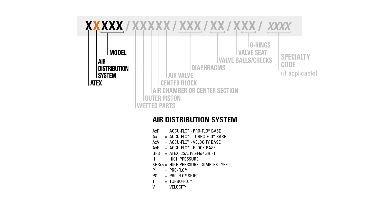The next digit is the designation for the pump's air distribution system, identified by one to three letters. For example, P is for ProFlow, PS is for ProFlow Shift, and T is for TurboFlow. The AccuFlow air distribution system starts with A, followed by the model, and includes the base air system. For example, a half-inch AccuFlow pump with the ProFlow base air distribution system would be denoted by A1P in this first section.